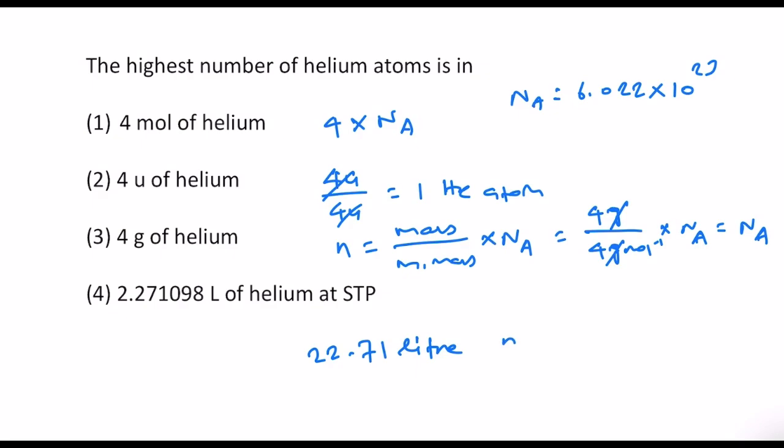And this means that N equals volume divided by molar volume times NA. So this will be 2.271 divided by 22.71. So this is basically 1 by 10, so 0.1 times Avogadro number.